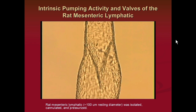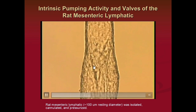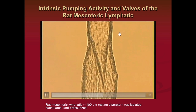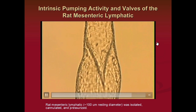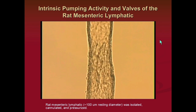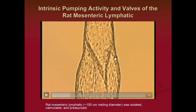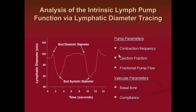This is an example of the intrinsic pump. This is a vessel just over 100 microns from the rat mesentery — taken out, isolated, dissected free from tissue, and cannulated so we can pressurize it. You can see the valve. This is normal speed — contracting and relaxing — to drive lymph flow from areas of low pressure to an area of high pressure downstream. We can analyze this vessel as both a conduit and a pump by looking at lymphatic diameter over time.